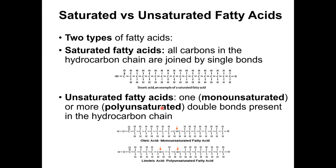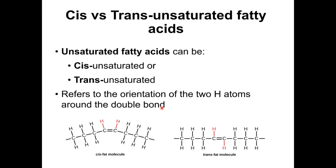If an unsaturated fatty acid has only one double bond it is referred to as a monounsaturated fatty acid; if there is more than one, it is a polyunsaturated fatty acid. Now when it comes to unsaturated fatty acids, depending on the orientation of the hydrogen atoms at the double bond, you can have either a cis or a trans unsaturated fatty acid.